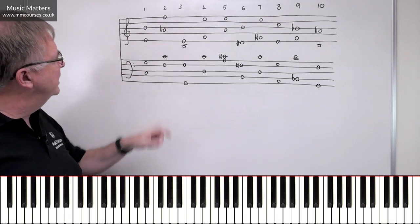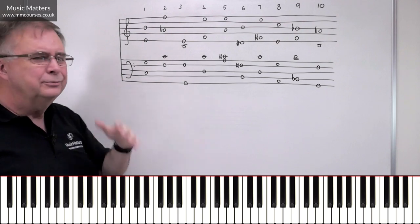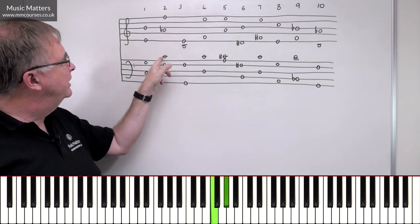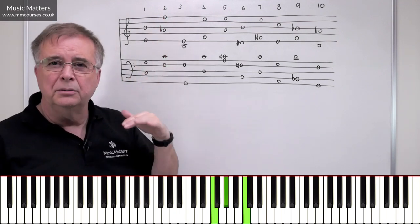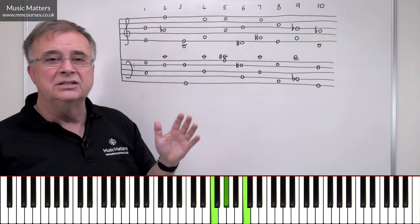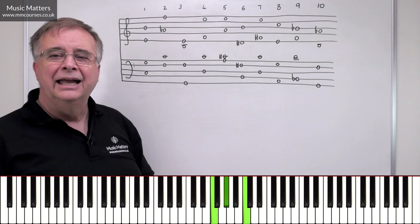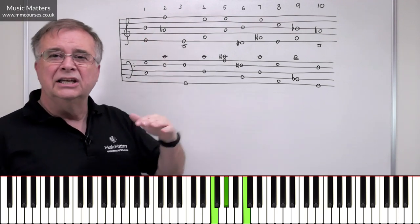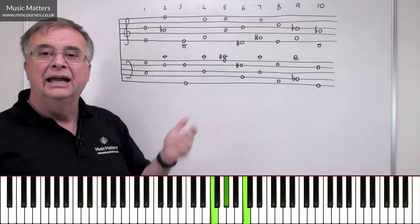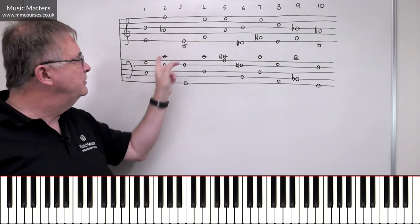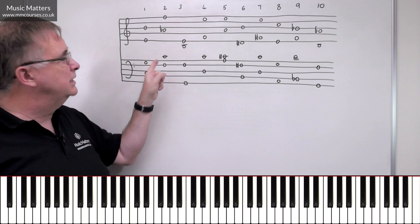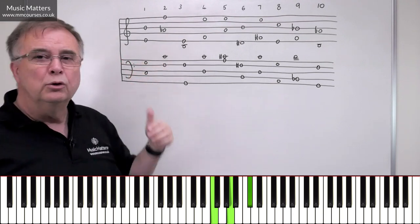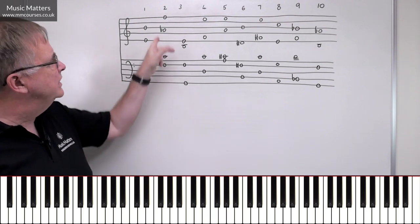Chord number two: F, C, A-flat, F. Can we organise that into a basic triad? F with A-flat a third above it, and C a fifth above it - that's a basic triad, so it's a basic diatonic chord. It's a chord of F minor. If it was A natural it would be F major, but because it's A-flat it's F minor. The recipe: major third plus perfect fifth equals major chord; minor third plus perfect fifth equals minor chord; minor third plus diminished fifth equals diminished; major third plus augmented fifth equals augmented.